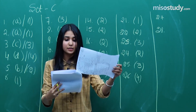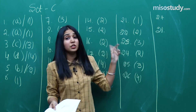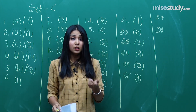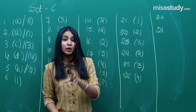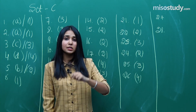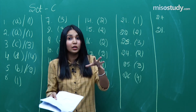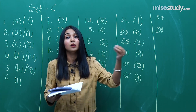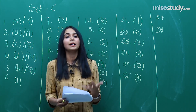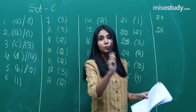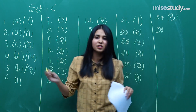Question number 27 was from haloarenes — we had also just seen a haloalkanes question. So the examiner picked two questions from the same unit rather than covering each section separately. Again a question from haloarenes, and the correct option is option C, i.e., option 3.